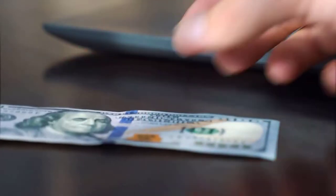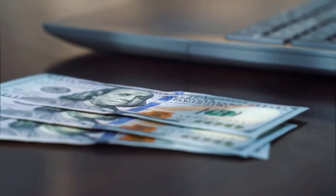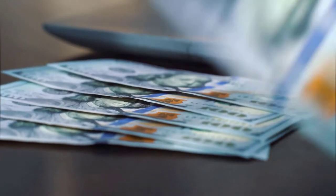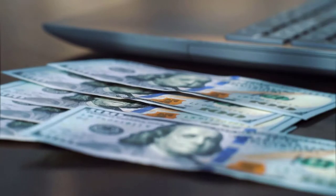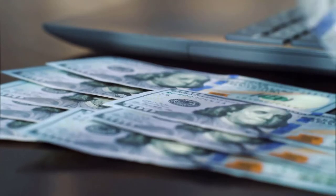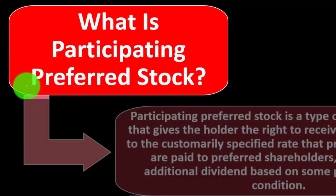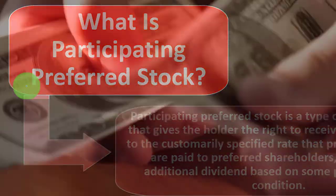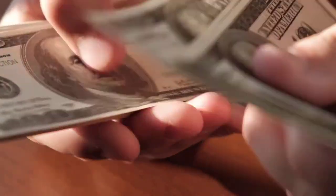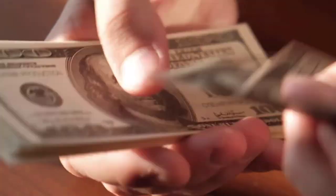Preferred stockholders must be paid before common stockholders — that's why they're called 'preferred.' It doesn't mean preferred stock is inherently better than common stock, but that's the preferred component. They also get paid sooner in the event of a liquidation or bankruptcy of the company than common stockholders, although after the bondholders.